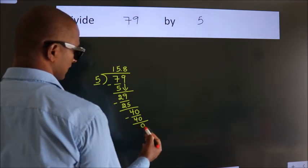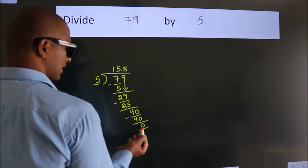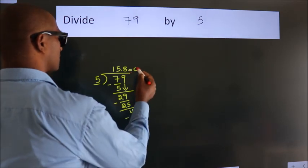Now, we subtract. We get 0. We got remainder 0. So, this is our quotient.